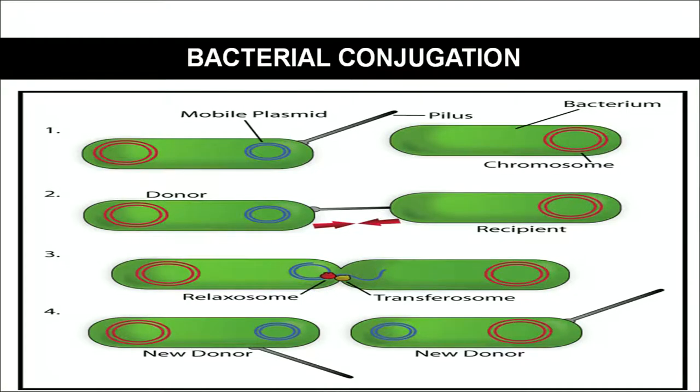Nature selects from variability. Eukaryotic organisms have meiosis and sexual reproduction as means of generating variability. How do prokaryotic organisms generate variability and help in the movement of genes from one strain to another? There are three different ways: conjugation, transformation, and transduction. In conjugation, the red structure is the main genome and the blue is a plasmid — an extra chromosomal element present in some bacteria. Bacteria containing a plasmid are known as F+ bacteria.